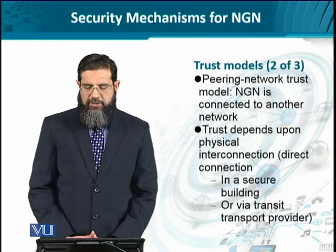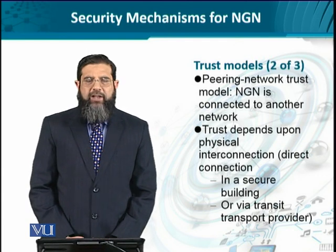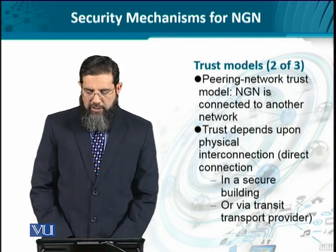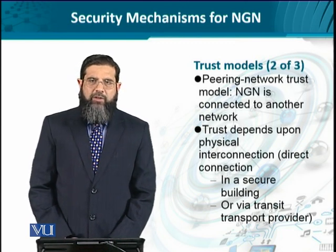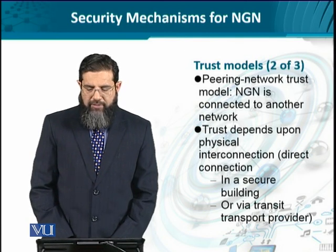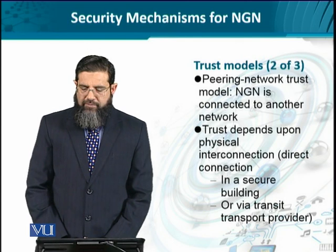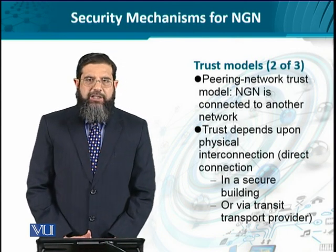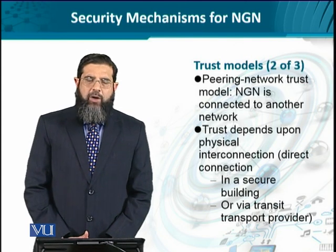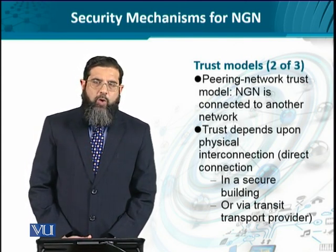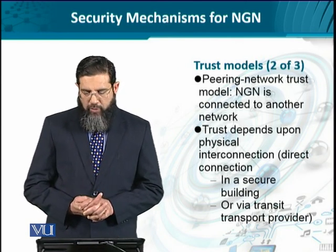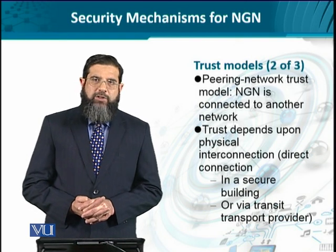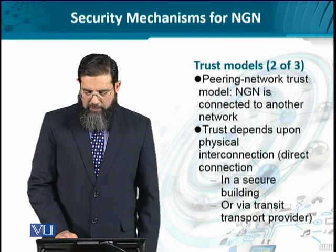The other option is the peering network trust model, where the NGN network is connected to another network — either another NGN network or a non-NGN network. The overall level of security depends upon the physical connection between these networks. If this direct connection is secured in a building, then the peering of the networks can be considered secure. If it is done through a third-party transit transport network provider, then security depends upon how secure that transport provider network is.